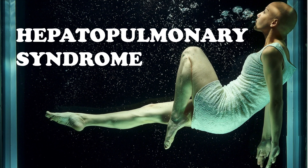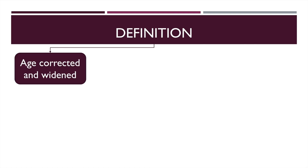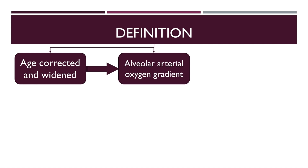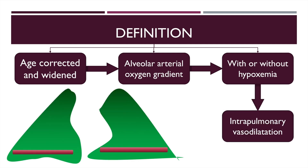Hello everyone, I am Dr. Prashant and in this presentation we will talk about hepatopulmonary syndrome. Hepatopulmonary syndrome is defined as an age-corrected and widened alveolar-arterial oxygen gradient, with or without hypoxemia, due to intrapulmonary vasodilatation. There is desaturation, and this is due to intrapulmonary vasodilatation.